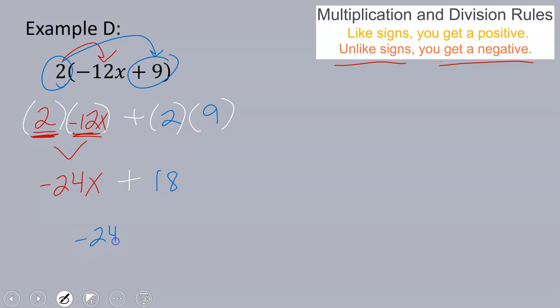These are not like terms because this term has an x and this term does not have a variable. So they cannot be combined. So our final answer is negative 24x plus 18.